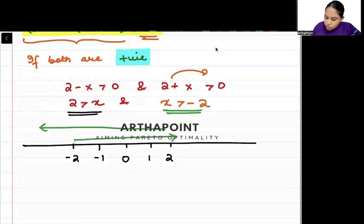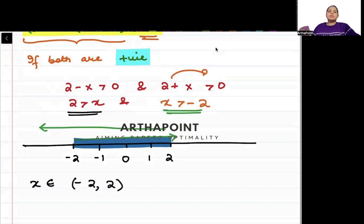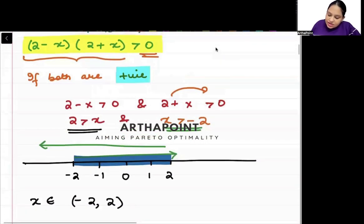What is the common region between the two? This region. It means that x will belong to minus 2 to 2. So this is what we get when both of them are positive.